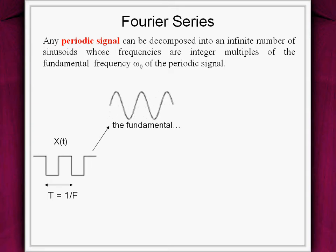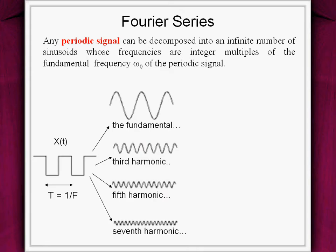First harmonic at 1000 Hz is called the fundamental frequency. A second harmonic of 2000 Hz, a third harmonic of 3000 Hz and so forth. Remember these harmonics are integer multiples of fundamental frequency.